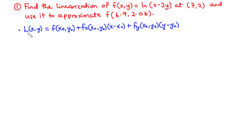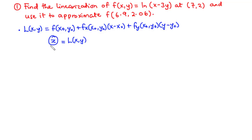The linearization of the function f(x,y), given as L(x,y), is equal to z, which represents the equation of the tangent plane. So the linearization of f(x,y) at the point (x₀, y₀) is equal to what we call the tangent plane approximation.